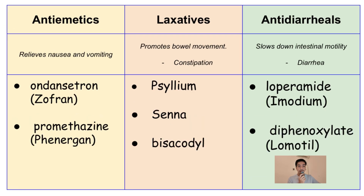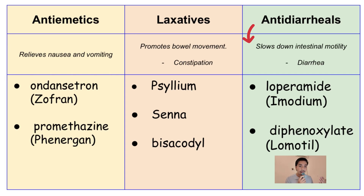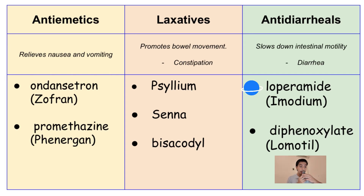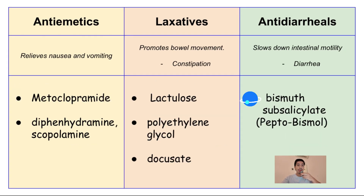And lastly, in the green corner, we have anti-diarrheals. From the name itself, they are given for patients with diarrhea because they slow down intestinal movement or motility. Examples of anti-diarrheals are loperamide, diphenoxylate, and bismuth subsalicylate.